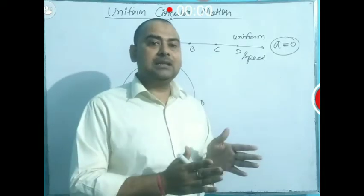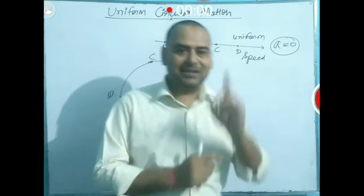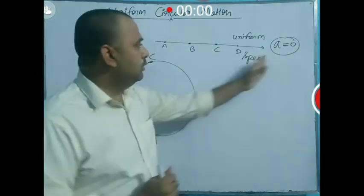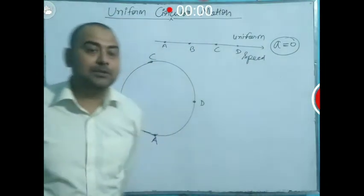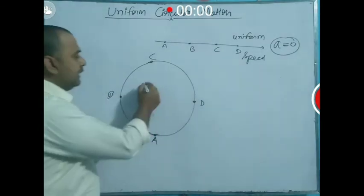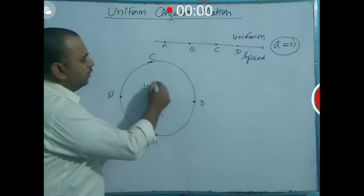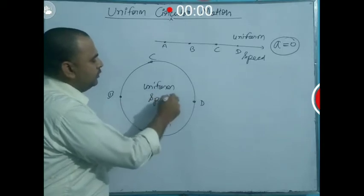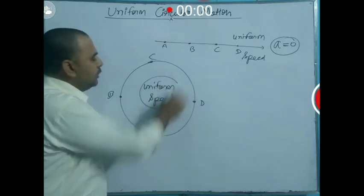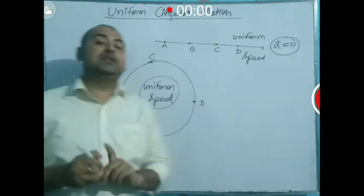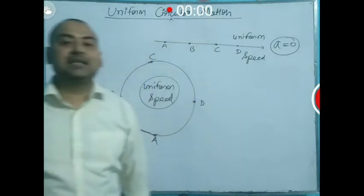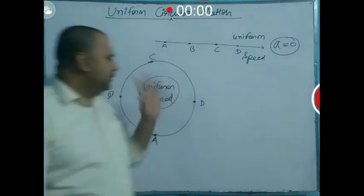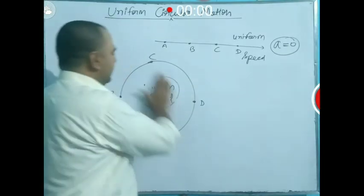However, the body moving on a circular path has acceleration, even though its speed is uniform. The body is moving along a circular path, and at every point along that path, something is changing.